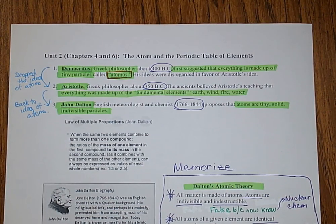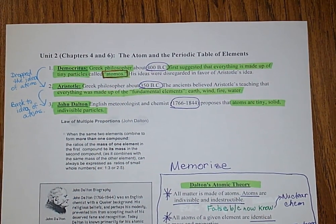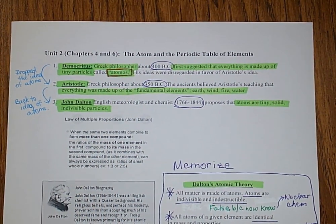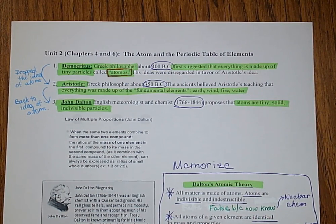Democritus was a Greek philosopher around 400 BC, and he was the first one to suggest that everything is made up of tiny particles called atomos. The second scientist, or philosopher, is Aristotle.